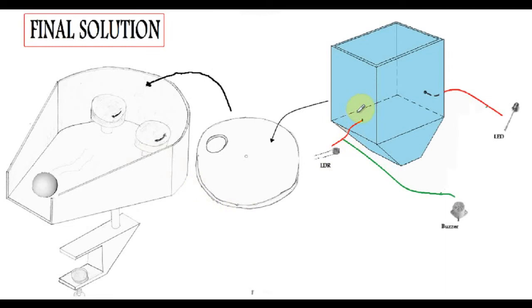On the ball container we have an LDR at one side and an LED at the other side. When the balls empty out of the container, the light from the LED is allowed to cross over to the LDR, therefore turning on the buzzer.